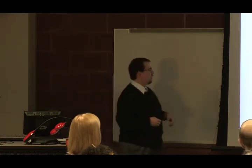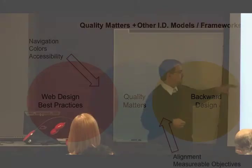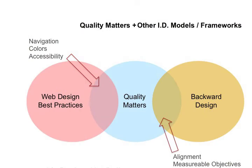Here's the intersection with best web design practices and Quality Matters, where you have navigation. Good web design will tell you that you don't want your website to be more than three clicks deep, because then students will get lost. You want a good color scheme. And for people with visual impairments, they need to be able to see the content — the same is true with online course design, especially in the realm of accessibility.